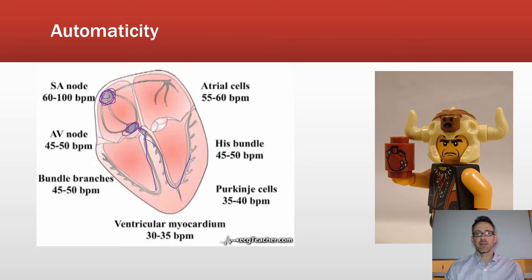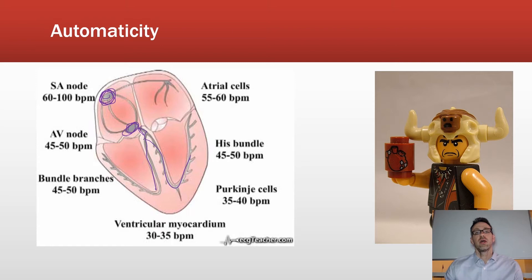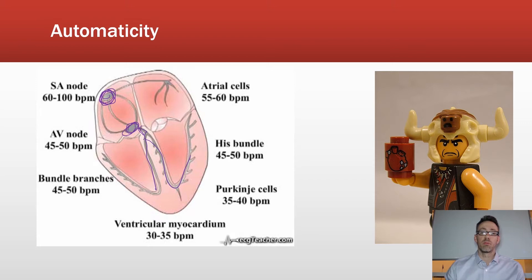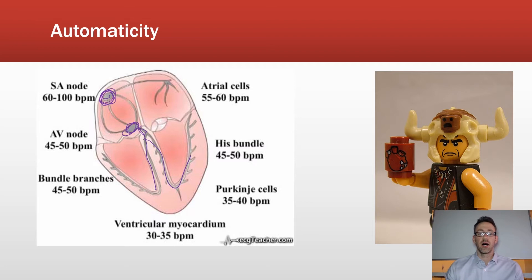The SA node is the pacemaker because it fires action potentials the fastest and propagates them via gap junctions toward the AV node. The AV node can also act as a pacemaker — it doesn't under normal circumstances, but if the SA node were blocked, the AV node could fire at around 45 to 60 beats per minute. Cells in the bundle of His can also fire automatically at varying rates.